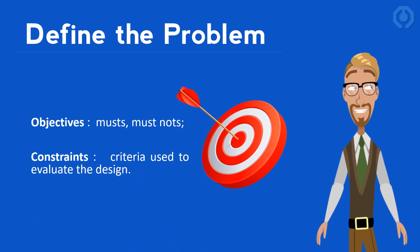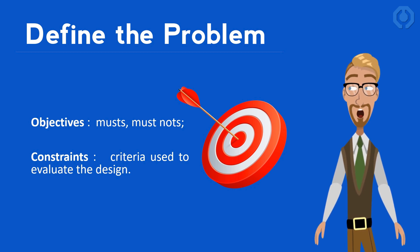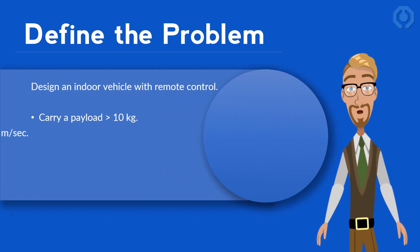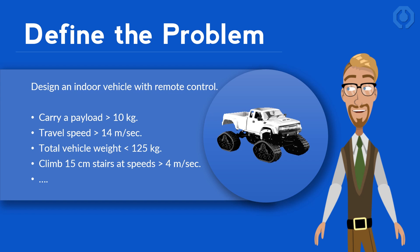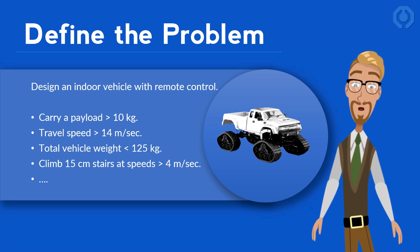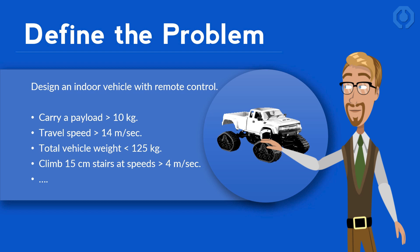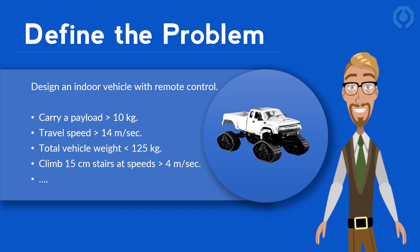It is essential to write a formal problem statement which says what the design is to accomplish. This formal statement should include objectives and goals, like what must or must not be done. Also, it should include constraints. For example, consider an indoor mobile vehicle. The problem statement could be: Design a vehicle which can maneuver in an indoor environment. The vehicle will be operated via remote control and must be able to travel up to a speed of 14 meters per second on a flat, horizontal, and dry concrete surface. Total vehicle weight must be less than 125 kg. Climb 15 cm high stairs at speeds up to 4 meters per second. Carry a payload of at least 10 kg. Fit through doorways. Travel in any direction.